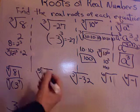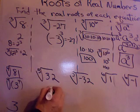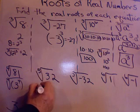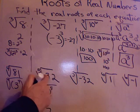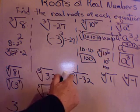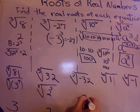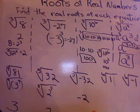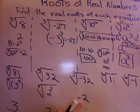Fifth root of 32. What number can I write to the exponent 5? 2 to the 5th. So the fifth root of 2 to the 5th is 2. 5th root of 32 is 2. 5th root of negative 32. Negative 2.